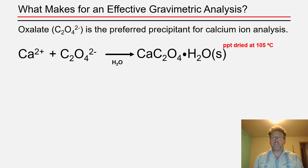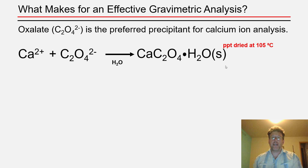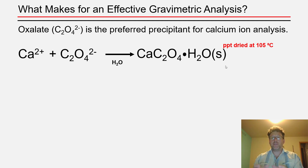It's extremely important that the precipitate formed is stable and has a known chemical formula. If the precipitate isn't pure, stable, and possessing a known chemical formula, there's no accurate way to use stoichiometry to determine the relationship between the moles of precipitate collected and the moles of analyte you started with. Knowing the chemical speciation and chemical formula of the precipitate is crucial to a successful gravimetric analysis.